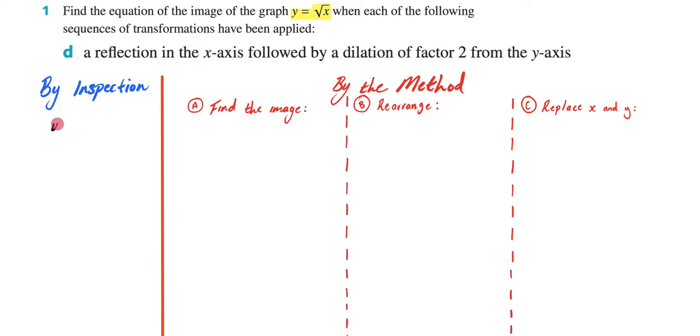So we're starting with y equals the square root of x. Then we're going to apply a transformation. So first we are going to do a reflection in the x-axis. Now when I'm reflecting in the x-axis, that means my negative will be on the outside of the square root.